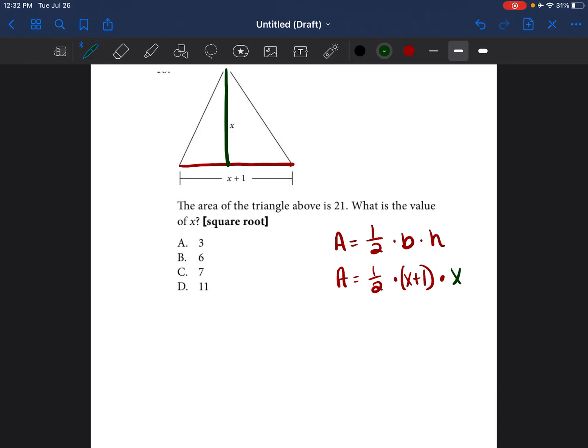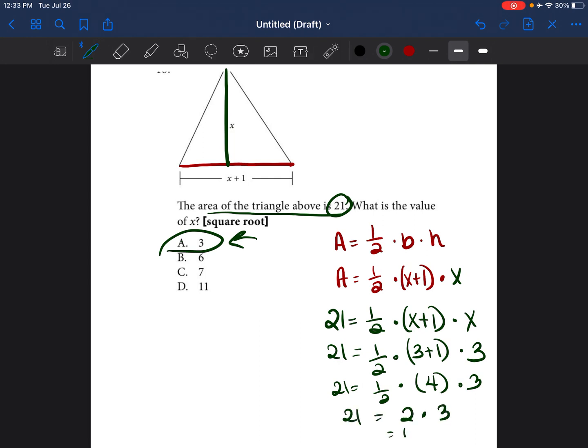So you can do this the complicated way or you can do it the easy way. You don't have to be a mathematician in order to get this problem right. And so I'm going to show you the route that I would recommend taking so that you could just get the answer correct. And I'm just going to use my answer choices and I'm going to plug it in to see if I can plug in A, B, C, and D, which one gives me the correct answer. So the area of the triangle is equal to 21. So instead of writing A, I'm just going to write 21 equals one half times x plus 1 times x. And first, I'm going to use the number 3. So 21 is equal to one half times 3 plus 1 times 3. 3 times 1 is 4. One half times 4 or one half of 4 is 2. 2 times 3 is equal to 6. 21 is not equal to 6. So A is not the correct answer.